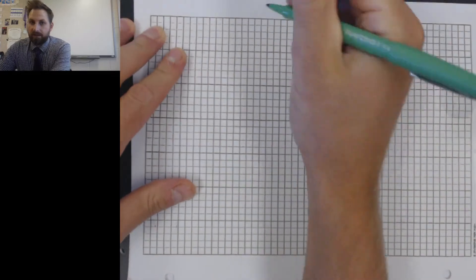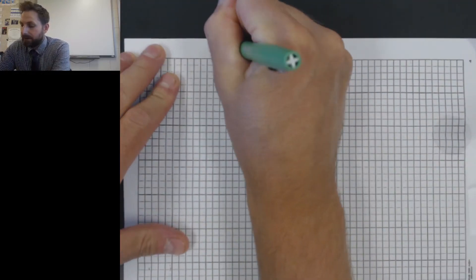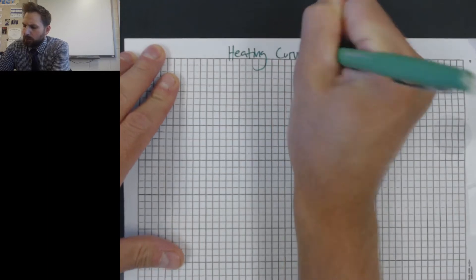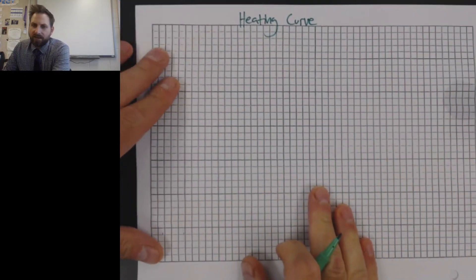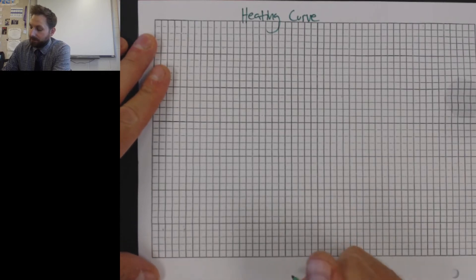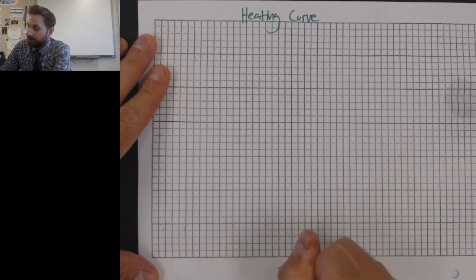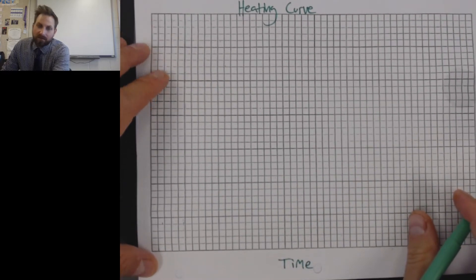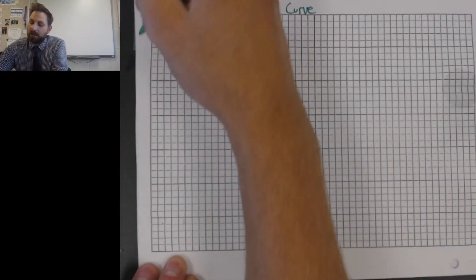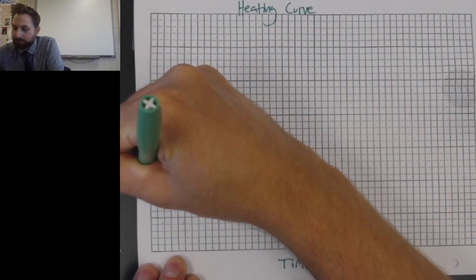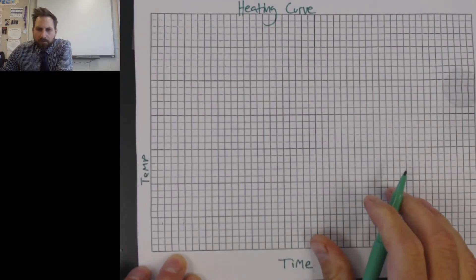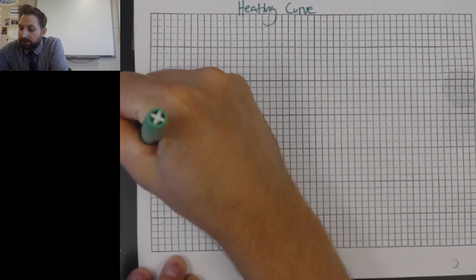So what a heating curve looks like — I'm going to title this thing 'Heating Curve.' A heating curve goes through the phase changes of things. I'm going to keep this very basic and call this time on the bottom. Time can be in seconds, minutes, or hours. And up the side we're going to do temperature in degrees Celsius.